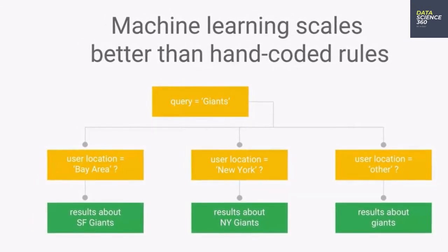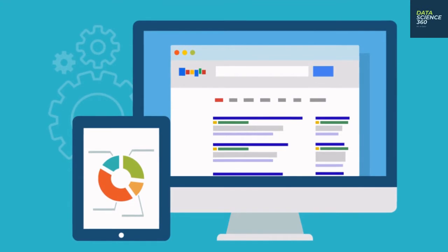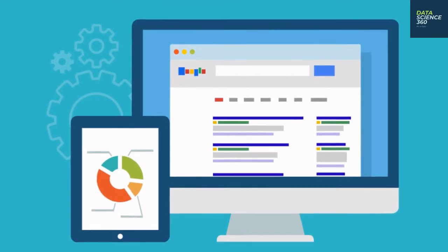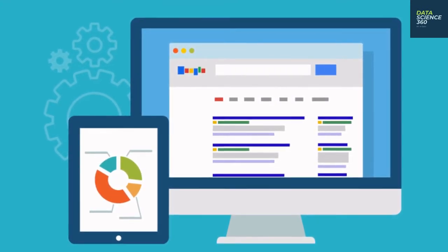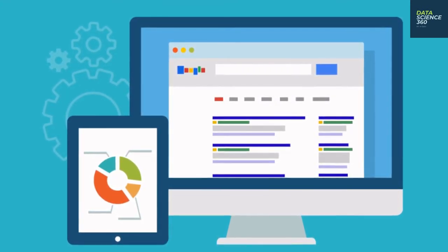If the query is Giants and the user is in the Bay Area, show them results about San Francisco Giants. If the user is in the New York area, show them results about New York Giants. If they're anywhere else, show them results about all people. This is just for one query. Multiply this by the large varieties of queries that people make, and you can imagine how complex the whole codebase had become.